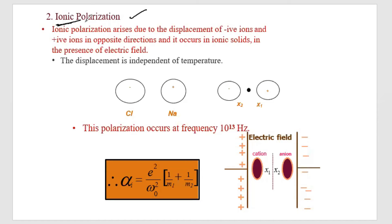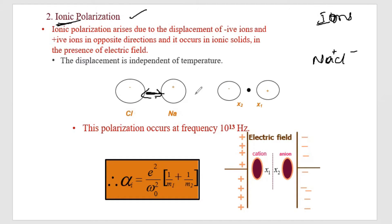As the name suggests, ionic polarization occurs in ions where positive and negative charges already exist. Taking the example of NaCl — Na+ and Cl- — when placed in an electric field, Na will move some distance and Cl will move some distance.